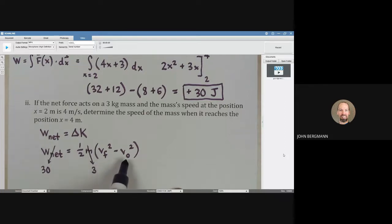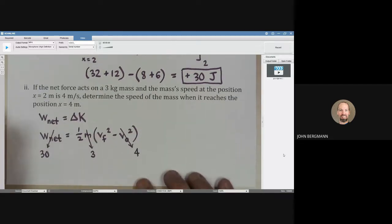v final is what we're looking for. v initial, in other words, when we start this, we're told that the mass is moving at 4 meters per second. So let's do one more line here and see if this comes out. 30 is equal to 1 half times 3, v final squared minus 16.